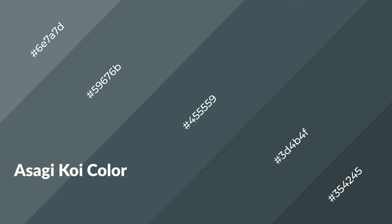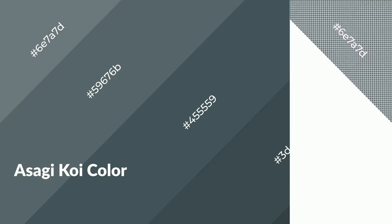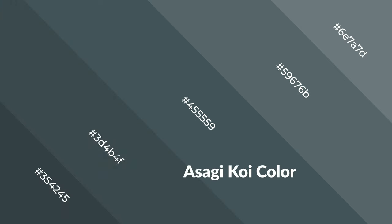Asagi koi is a cool color and it emits calming, serene, soothing, refreshing, spacious, unwinding, peaceful, and relaxed emotions. Cool colors are like water, ice, sky, grass, soft, and snow. You can see them used in baby products.